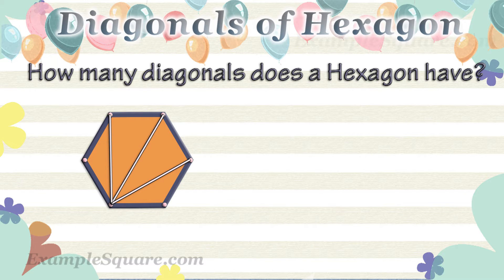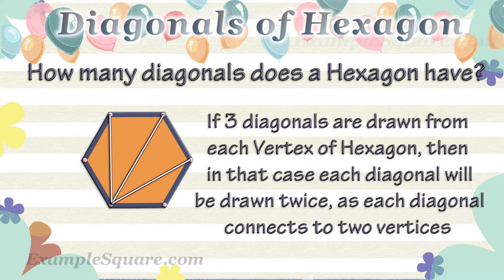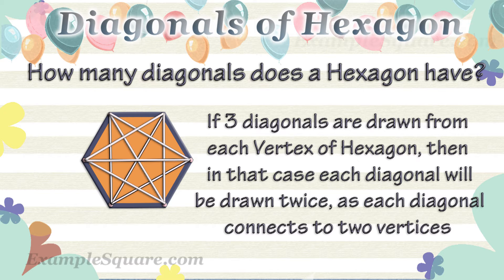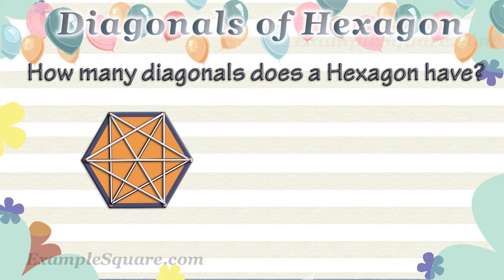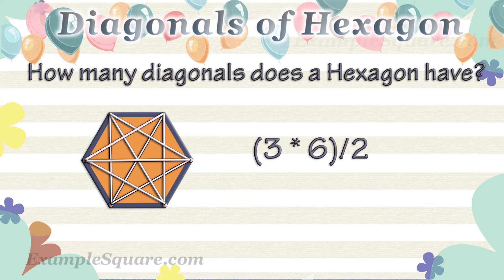If three diagonals are drawn from each vertex of a hexagon, each diagonal will be drawn twice, since each diagonal connects two vertices. Considering that three diagonals can be drawn from each of the six vertices, and that each diagonal is drawn twice, the total number of diagonals can be calculated as follows.